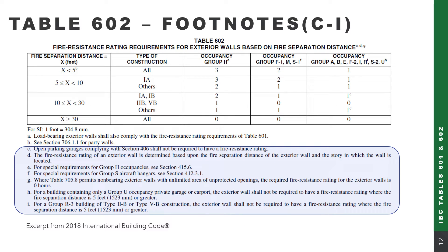In addition to Footnotes A and B, there are additional footnotes C through I for Table 602 that we are not going to discuss here, but please make sure to reference those before finalizing your design. In particular, if you have any storage, high hazard occupancy, or even a group U occupancy, those footnotes will be relevant.